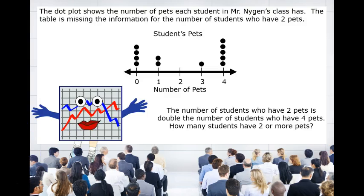Don't let the fun stop. Let's try another one. The dot plot shows the number of pets each student in Mr. Wynn's class has. The table is missing information for the number of students who have 2 pets. The number of students who have 2 pets is double the number of students who have 4 pets. How many students have 2 or more pets?